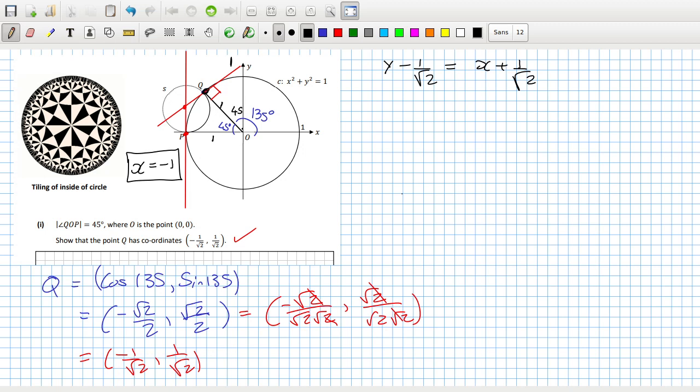Okay, so x is minus one, so y minus 1 over root 2 equals minus one plus 1 over root 2. So y equals minus one plus one over root 2 plus one over root 2. So that's minus one plus root 2. So the center is at minus one and minus one plus root 2. That's the center.